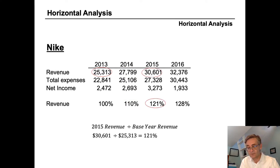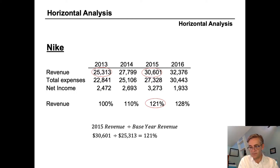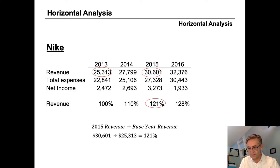We can do the same thing for 2015. The base year is still 2013, and now we need to calculate the percentage for 2015. 2015 expressed as a percentage of 2013 is 30.6 divided by the base year amount of 25.3, which gives us 121 percent. It's important to note that in this style of analysis we are not looking for the year-over-year change, but the cumulative change over a base year.